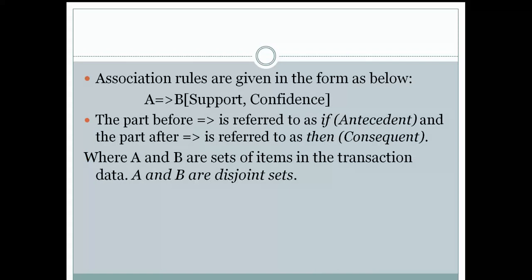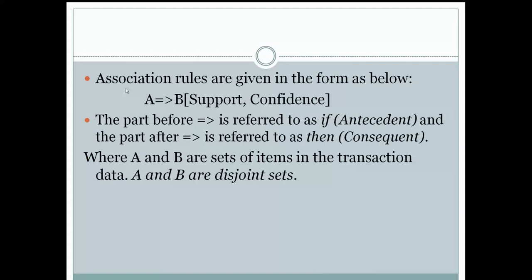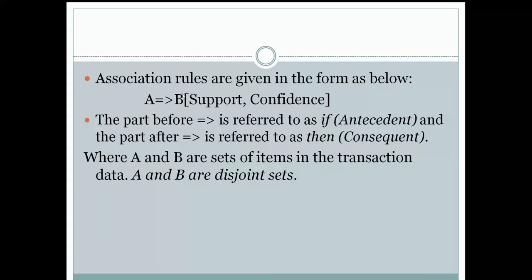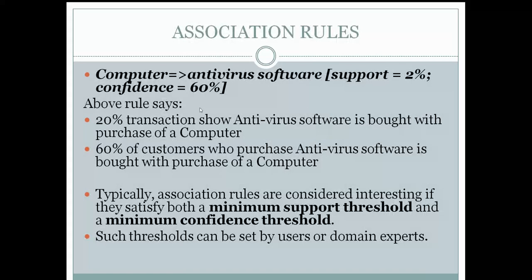Association rules comprise support and confidence, which we discussed in the previous lecture. In the rule A tends to B with support and confidence, the part before 'tends' is referred to as the antecedent, and B is your consequent. A and B are sets of items in the transaction data. For that we calculate the support and confidence. We'll get a clearer picture when we do examples in the coming lectures.